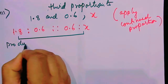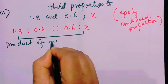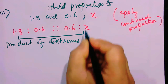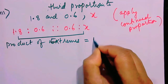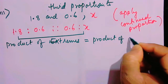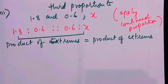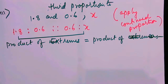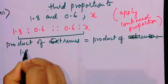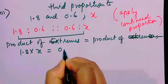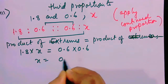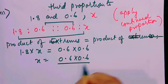Product of extremes is equal to product of means — because x is on this side, x will be on the extremes side. So 1.8 multiplied by x is equal to 0.6 into 0.6. Therefore x will be equal to 0.6 into 0.6 by 1.8.